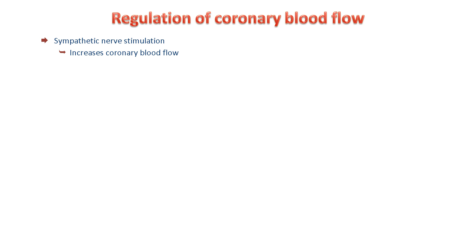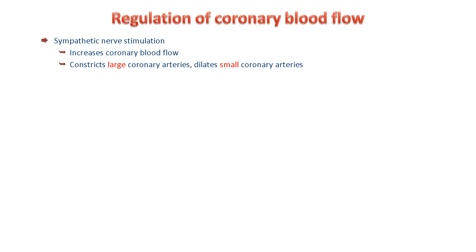A major regulator of coronary blood flow is the sympathetic nervous system. When stimulated, such as when you exercise, the sympathetic nervous system has the overall effect of increasing coronary blood flow to support the increased work done by the heart. However, it has differential effects on coronary arteries of different size.